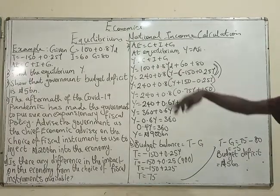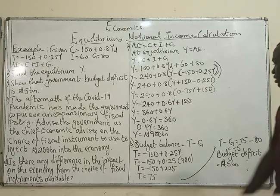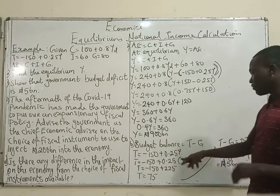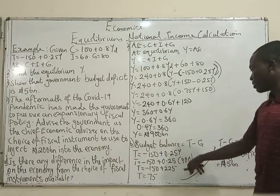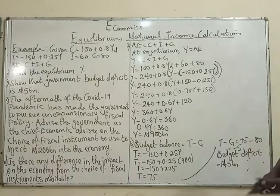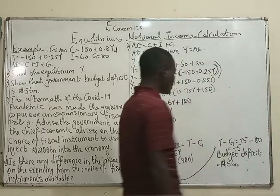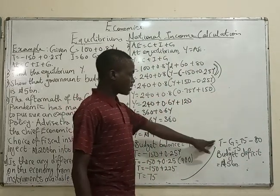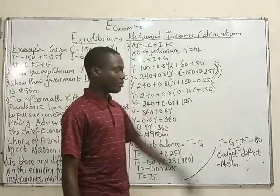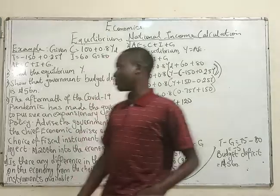So the tax function is minus 150 plus 0.25Y. We substitute Y equals 900: 0.25 times 900 is 225, then minus 150 plus 225 is 75, so tax is 75. The budget balance is tax revenue minus government spending: 75 minus 80 equals minus 5. Because the budget balance is negative, we have a budget deficit of 5 billion — proved.